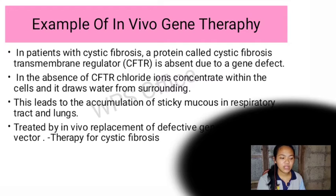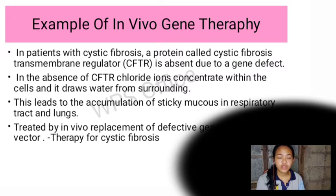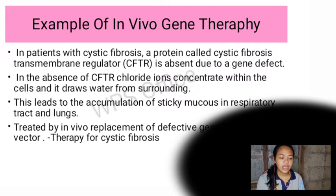In cystic fibrosis, in the absence of CFTR, chloride ions concentrate within the cells and draw water from surrounding tissue. This leads to accumulation of sticky mucus in the respiratory tract and lungs. It is treated by in vivo replacement of the defective gene using an adenovirus vector.